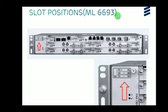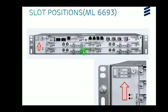This shows the slot positions of the Minilink 66693. The slots are numbered from slot 0 through slot 6. There is a fan unit slot for cooling, MMU unit slots (each MMU supports 2 radio links, with 4 MMU slots giving 8 radio links total), a power filter unit slot providing redundant power supply (Power Supply A and B), and the NPU 1002 Node Processor Unit slot.